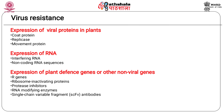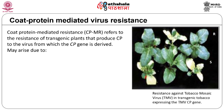The viral coat protein has multiple functions in the course of virus replication and infection of host plants. These include encapsulation, viral RNA translation, systemic movement, vector transmission, and influence on disease symptom severity. In successful examples, transgenic plants expressing the CP gene of a virus provided resistance against the corresponding virus and related strains.